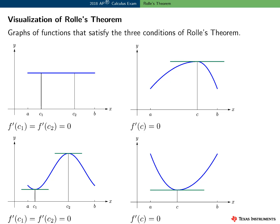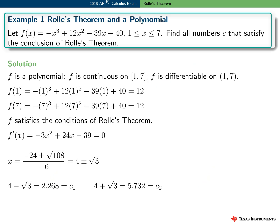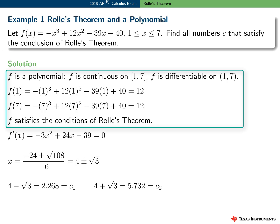You might think about counterexamples when at least one of the conditions for Rolle's theorem is not true. Here's an example involving Rolle's theorem and a polynomial. Consider the function f on the interval one to seven. Find all the values of c that satisfy the conclusion of Rolle's theorem. First, we need to check to make sure the three conditions are satisfied. f is a polynomial, so it's continuous and differentiable everywhere. And f of one equals f of seven equals twelve.